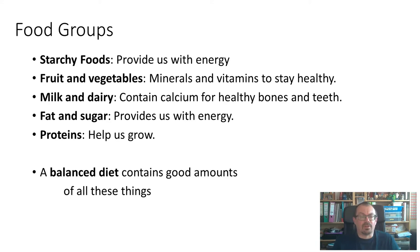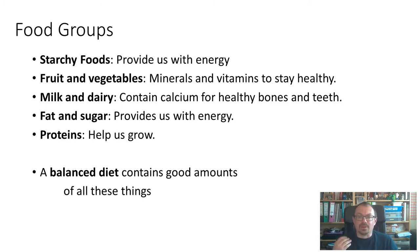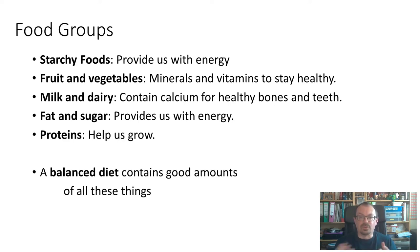So this is a summary of the main food groups: starchy foods which give us energy, fruit and vegetables, milk and dairy, fat and sugar, and proteins. It's important to realize there's no such thing as an unhealthy food on its own — if all you ate was fruit and vegetables you may not get all the other things your body needs. So it's good to eat all the different food groups in good amounts, and we call this a balanced diet.